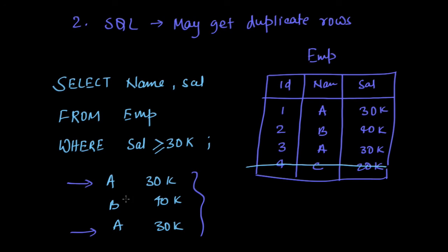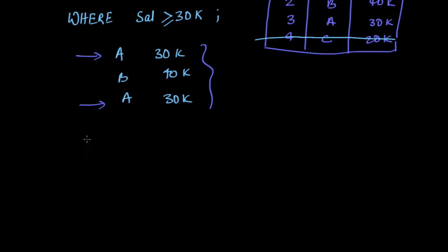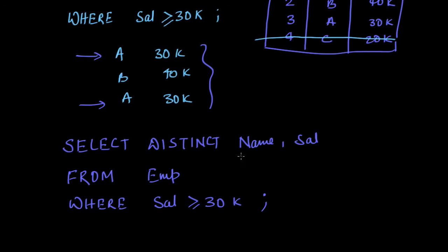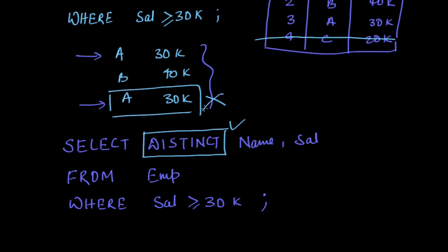If we want to display only distinct values or unique records, we use the keyword DISTINCT. The query becomes SELECT DISTINCT name, salary FROM employee WHERE salary > 30k. Everything is the same as the previous query, just adding the DISTINCT keyword. Once we use DISTINCT, the extra duplicate row is eliminated and we get only the unique rows as output. So we get distinct records when we use the DISTINCT keyword.